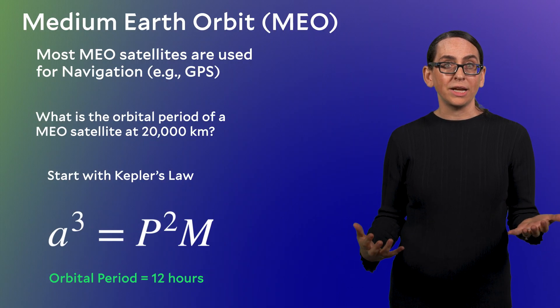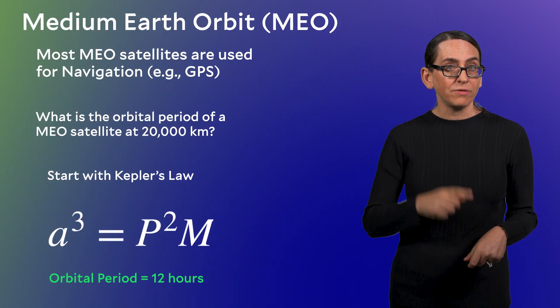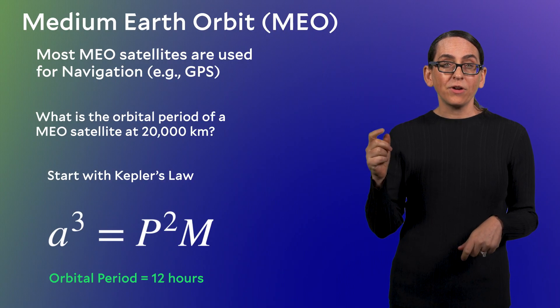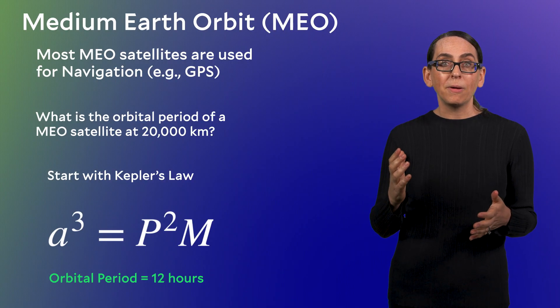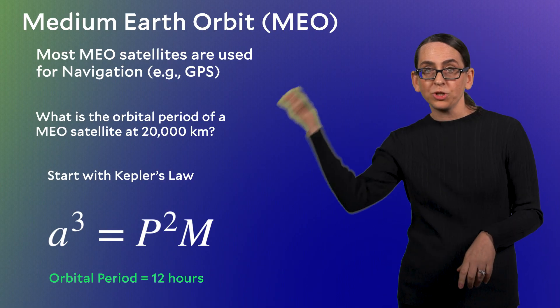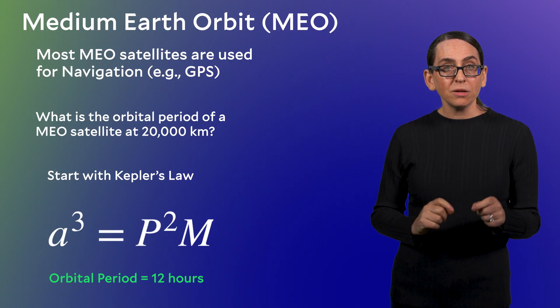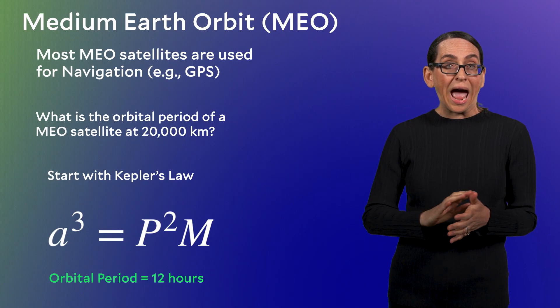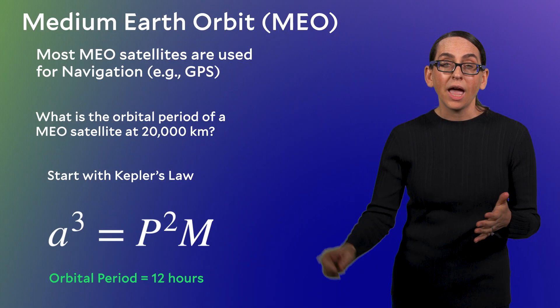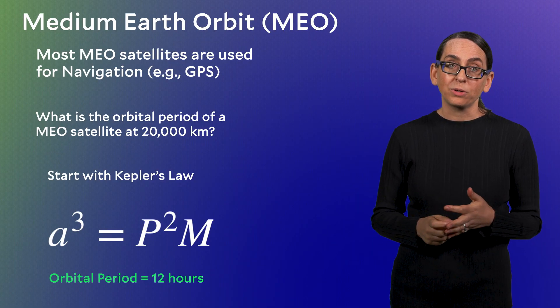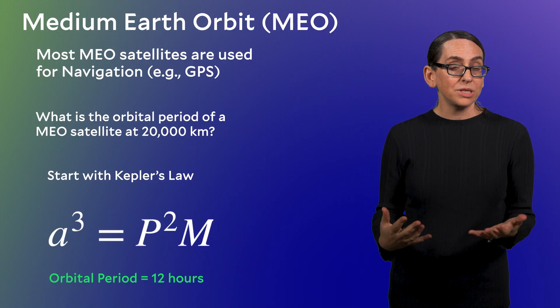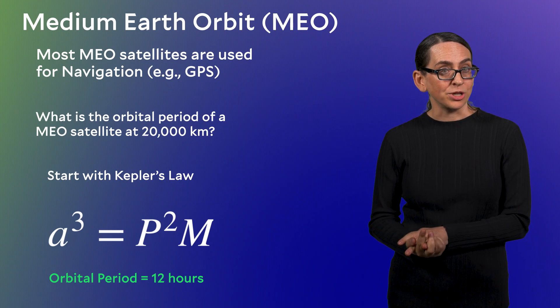12 hours is kind of interesting. The Earth rotates every 24 hours. So if I'm sitting on Earth and looking up, unlike a low Earth orbit satellite which just zooms across my horizon quickly in a few minutes, a medium Earth orbit satellite will take hours to move across the sky, and it'll come back to the same point twice per day. This is a particularly useful property if you're trying to determine your location.